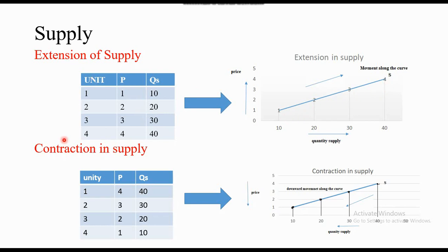In extension and contraction, we move along the supply curve. In extension, we move upward along the curve so that price and supply both increase. In contraction, we move backwards — a downward movement — so that price is reduced and supply decreases accordingly.